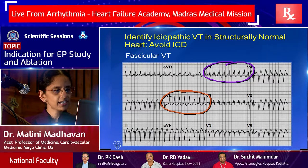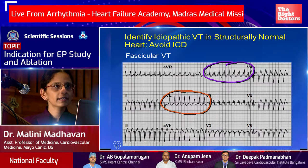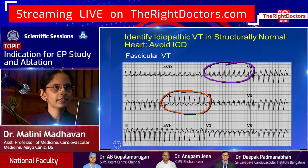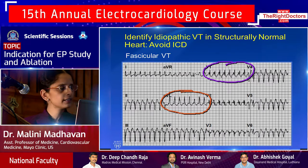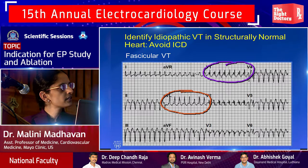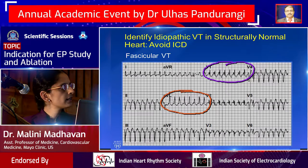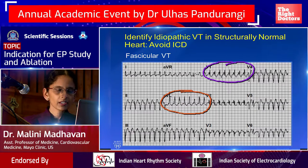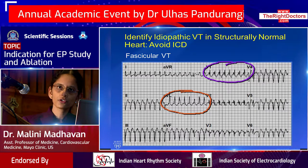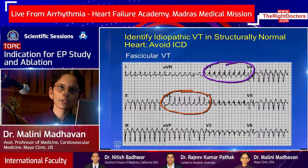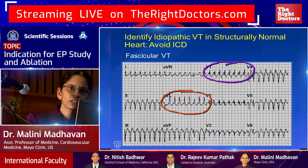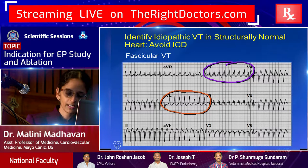Another uncommon but important VT in structurally normal hearts: verapamil-sensitive ventricular tachycardia, also called fascicular VT. This has a right bundle branch block pattern with a relatively narrow QRS complex and a sharp upstroke, indicating activation from the fascicular system — in this case, from the left posterior fascicular region. This is not an ICD indication; treat with medications first, and if ineffective, ablation has a very high success rate.